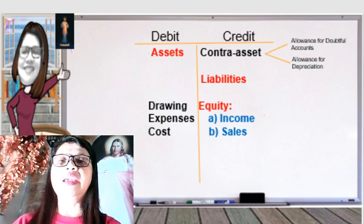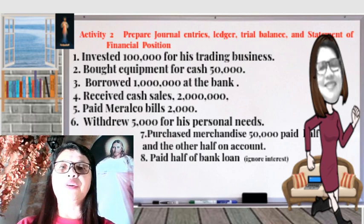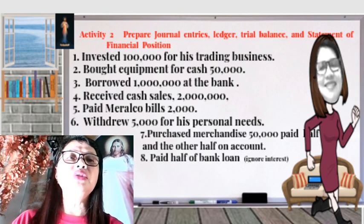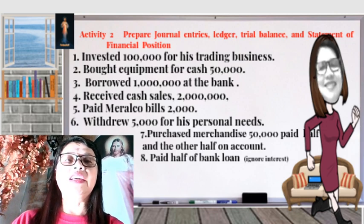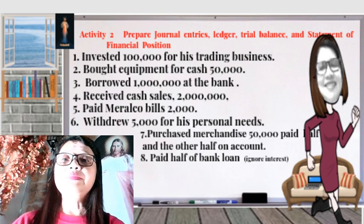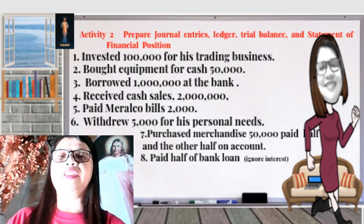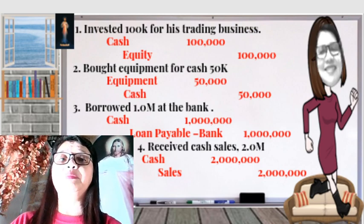I've prepared a short exercise — Activity 2 — where you will prepare the journal entries, the ledger, the trial balance, and the statement of financial position. Let's analyze together: the owner invested $100,000 for his trading business.